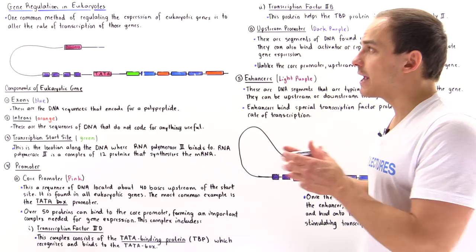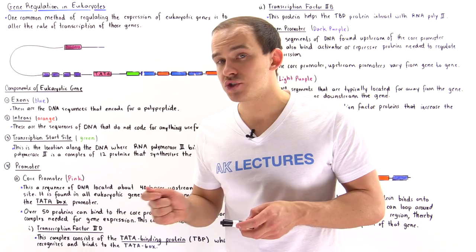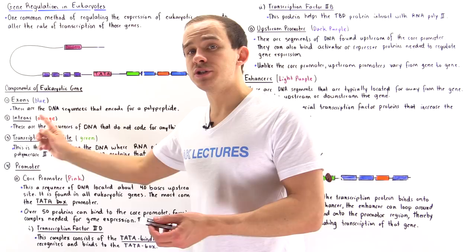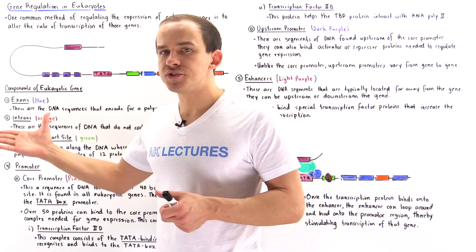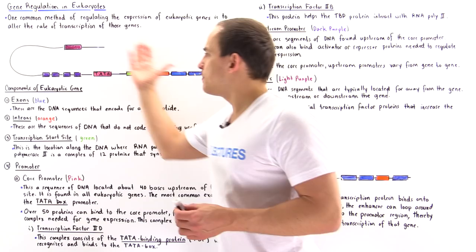In this lecture, we're going to focus on the most common method of regulating genes in eukaryotic cells, and this is on the level of transcription itself — by actually changing the rate at which transcription takes place. We're also going to briefly discuss the different components that are found along a eukaryotic gene.